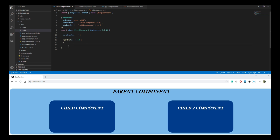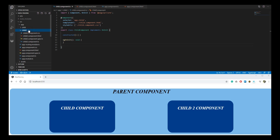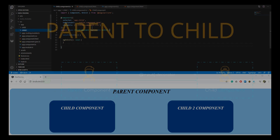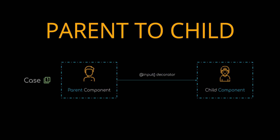Here, I have created two components — child and child2 — inside the app component. This results in establishment of a parent-child architecture with the app component being our parent component. In our first case, we will be passing data from the parent component to the child component using the input decorator.